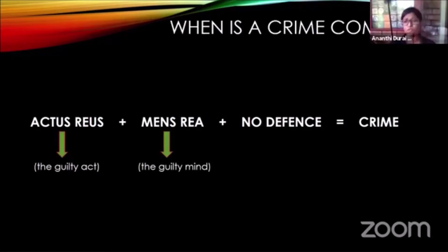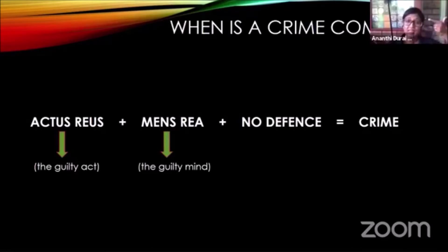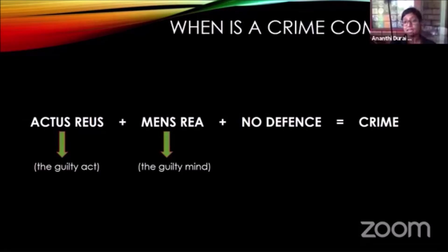For the simplest example: if I took a gun, held it against your head and pulled the trigger, and as a result you died, I have committed the actus reus of murder because I caused your death. And if I held a gun to your head and pulled the trigger, I very clearly have an intention to kill you — so I've done the guilty act and I have the guilty mind. That's murder.